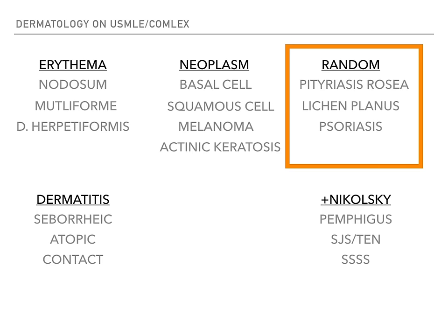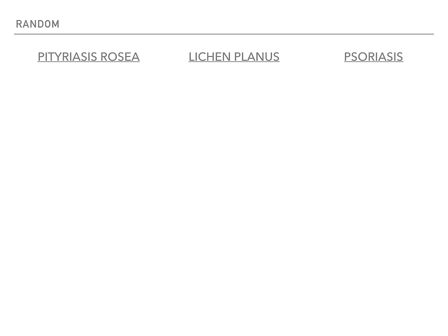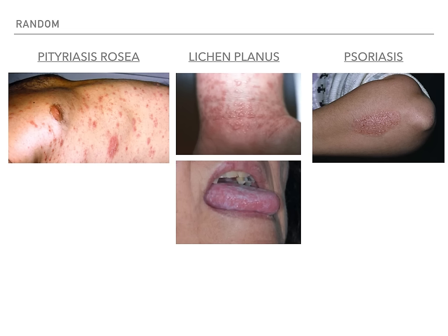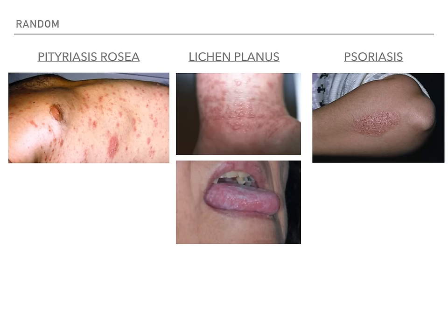Let's talk about the random category: pityriasis rosea, lichen planus, and psoriasis. For pityriasis rosea, it's going to be a herald patch with a later eruption on the trunk in a Christmas tree pattern. Lichen planus is going to be purple, polygonal, planar, pruritic plaques and papules — the P's. And for psoriasis, it's going to be silvery scales on the extensor surfaces that bleed when scraped.